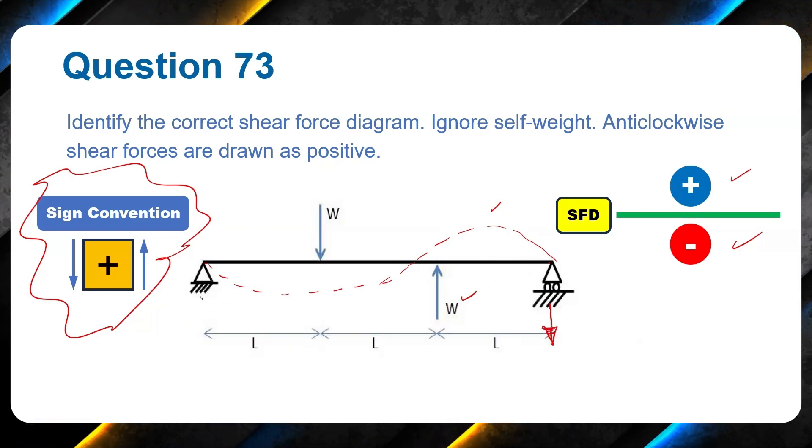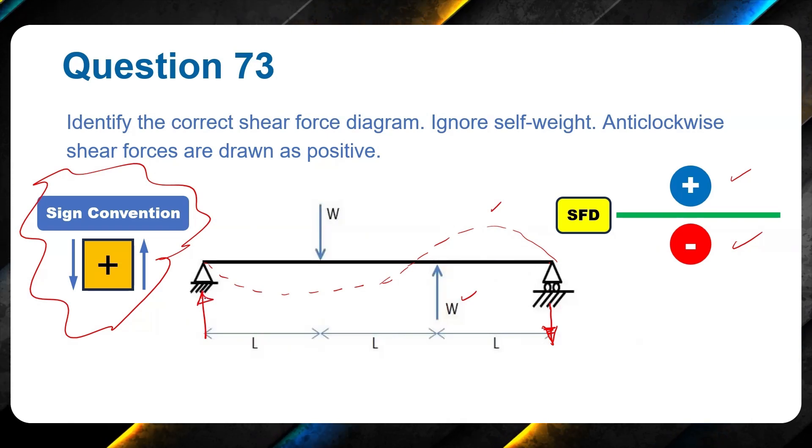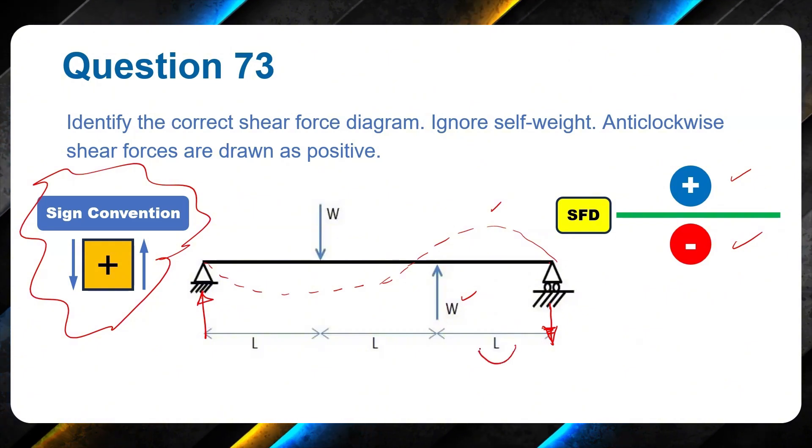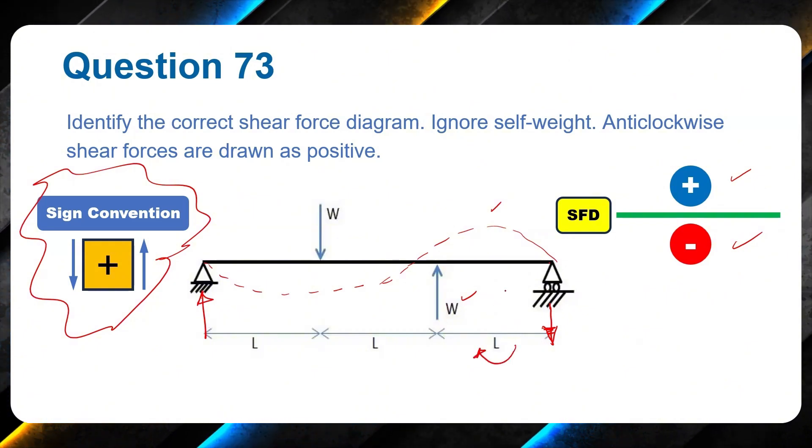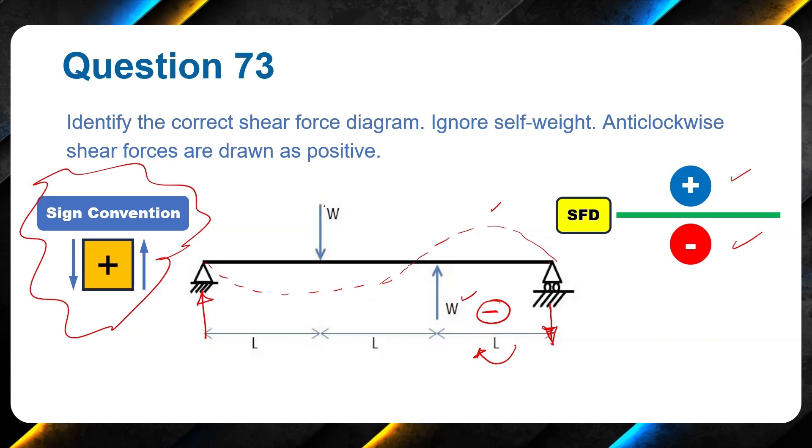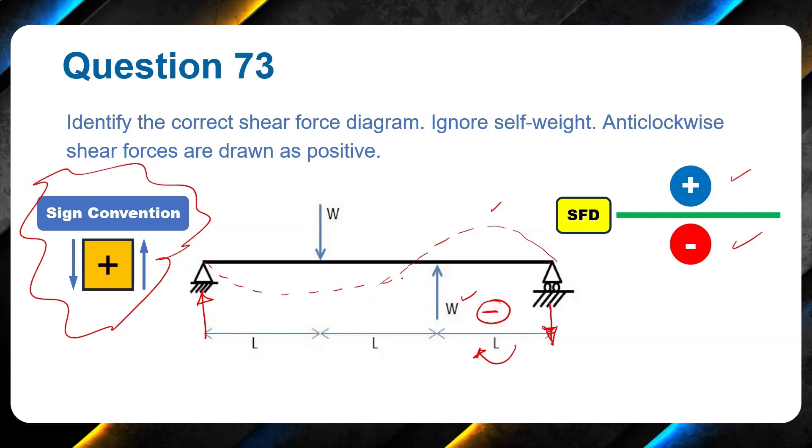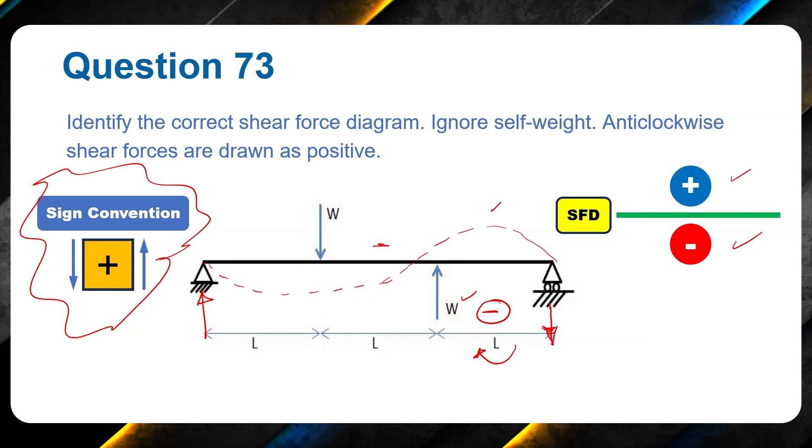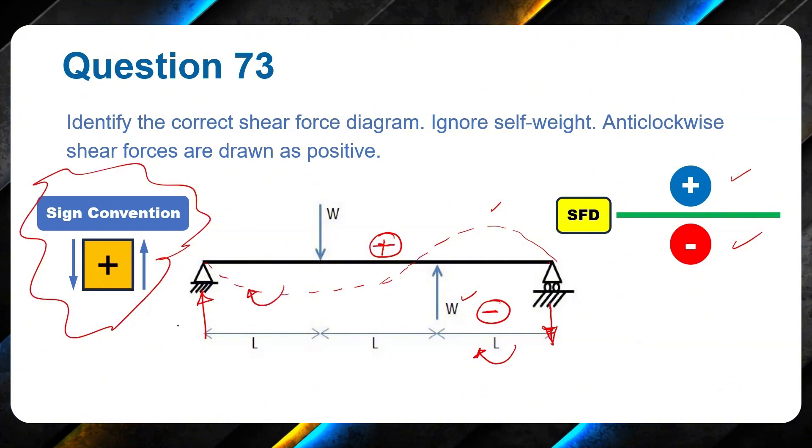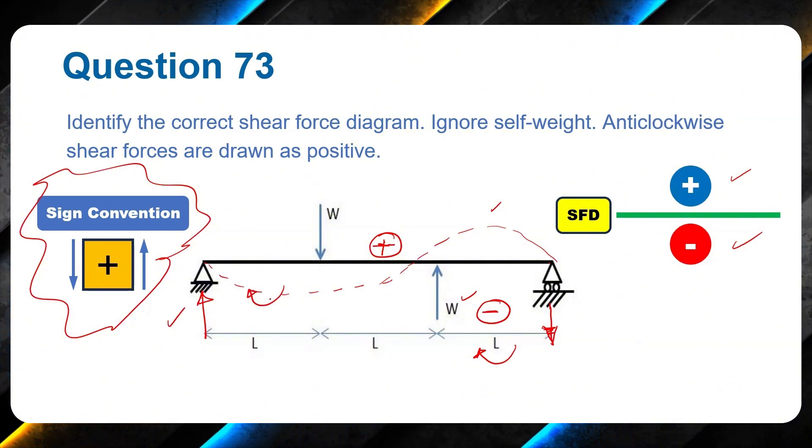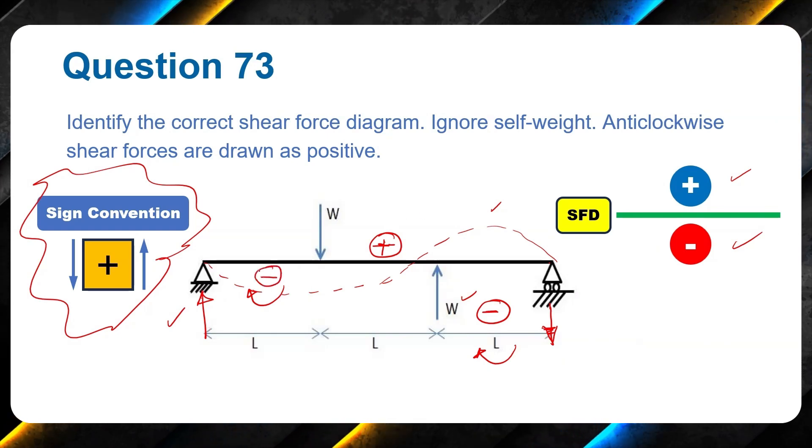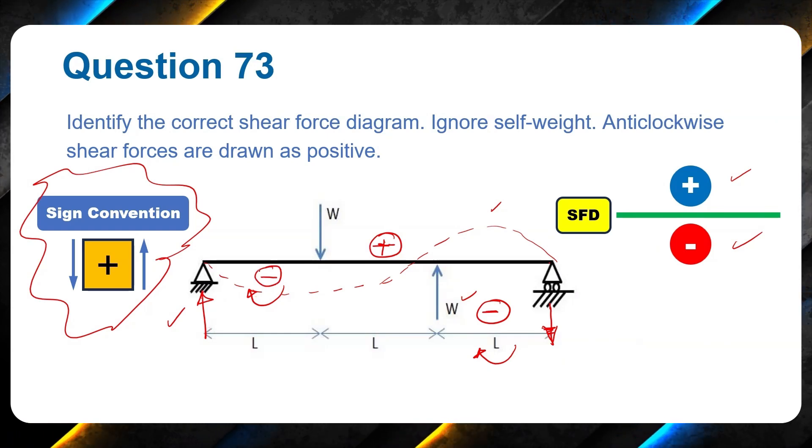And reaction over here, it should be upwards. Here, the moment generated is clockwise, so clockwise is considered negative. And between this W and W, moment generated is anticlockwise. So anticlockwise is considered positive. And between this W and the reaction at left, the moment generated is clockwise, so clockwise is considered as negative. Why is this important? You will see in a minute.